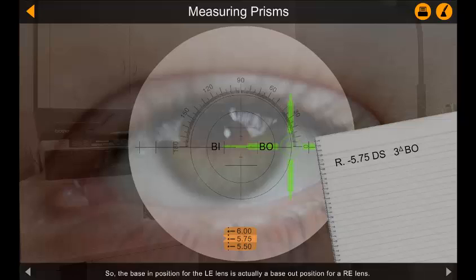So, the base in position for the left eye lens is actually a base out position for a right eye lens. You need to be careful of this type of lens orientation when measuring prisms.